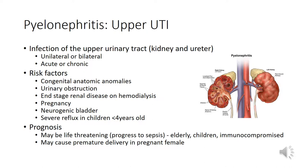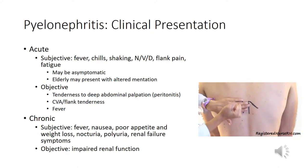Pyelonephritis can precipitate premature delivery in pregnant females, so it's very important to recognize the signs and symptoms. These include fever usually greater than 101, chills, shaking, nausea, vomiting, and diarrhea at times.